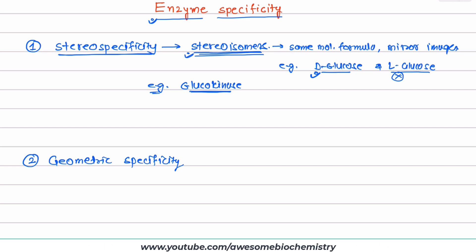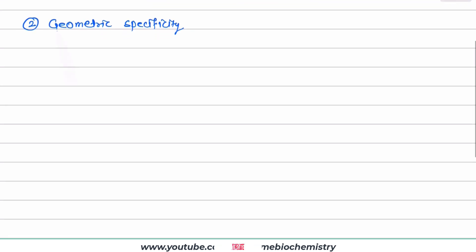Now in this stereospecificity, almost all enzymes show stereospecificity except for the enzyme commission class number 5, and that is isomerases. So this class of enzyme does not show any stereospecificity.